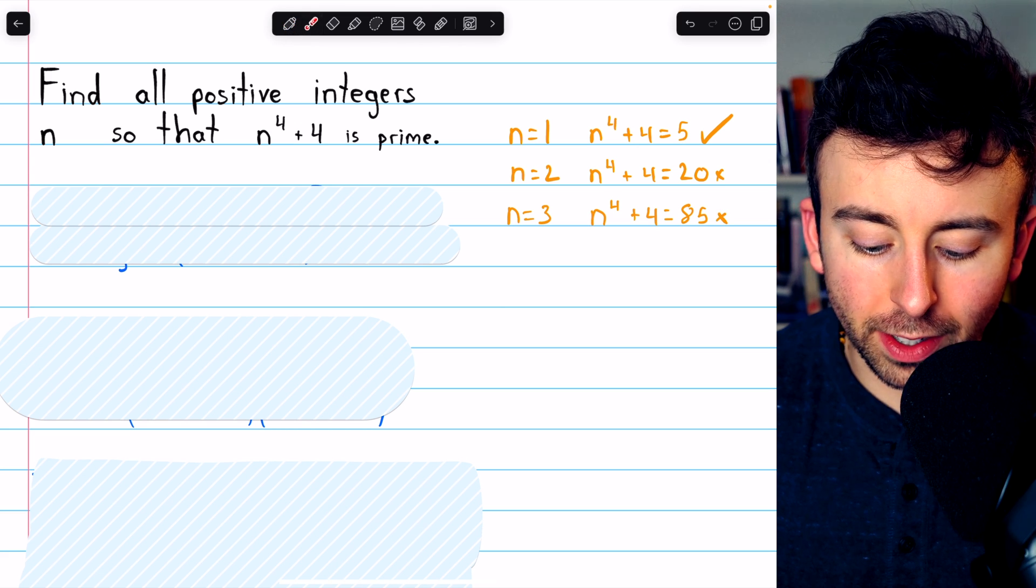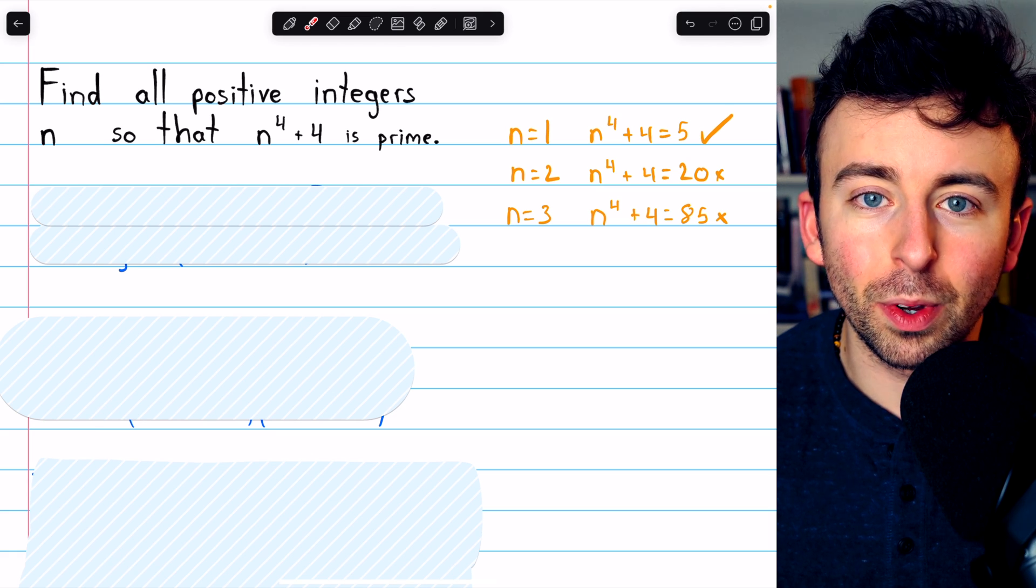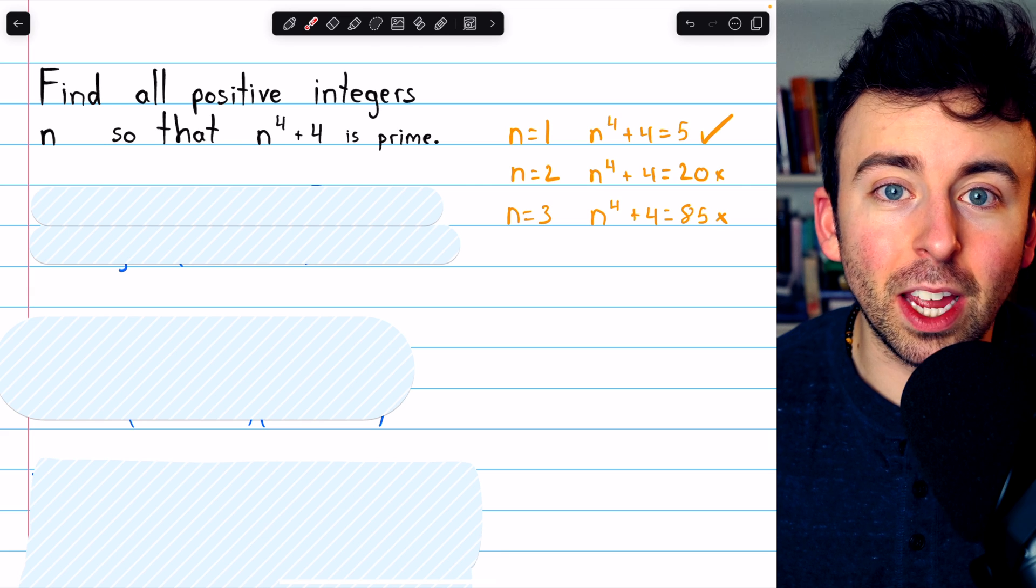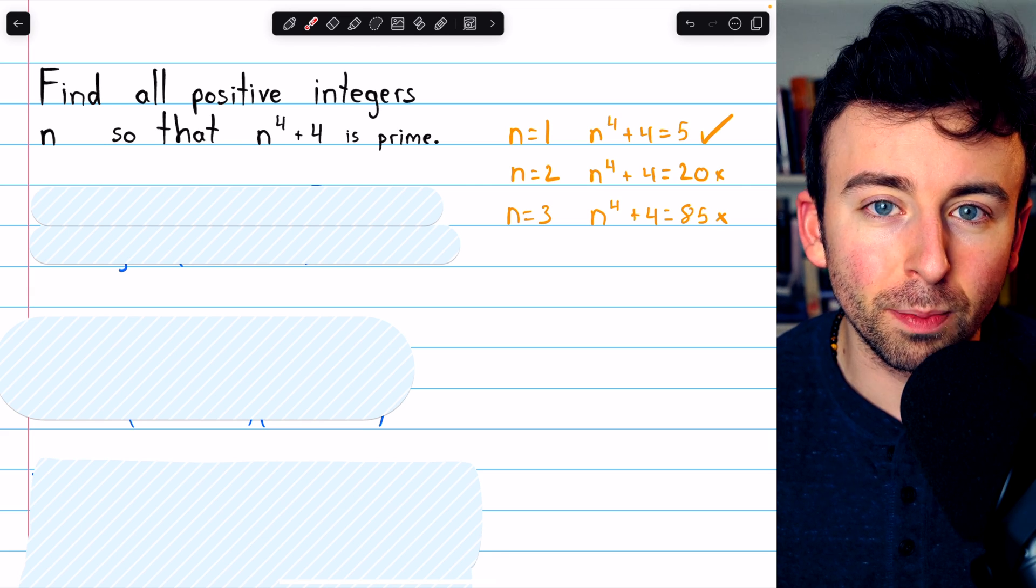And of course, since we are dealing with a fourth power, these values will pretty quickly become unmanageable without a calculator, and then they'll become unmanageable even with a calculator. So we'll have to use some smart algebra.